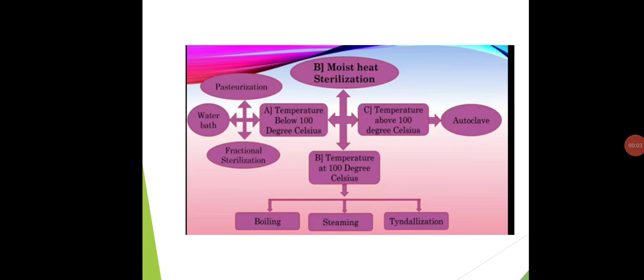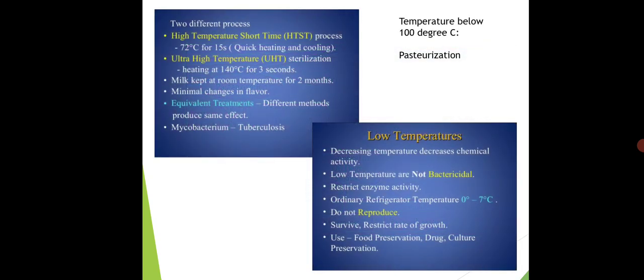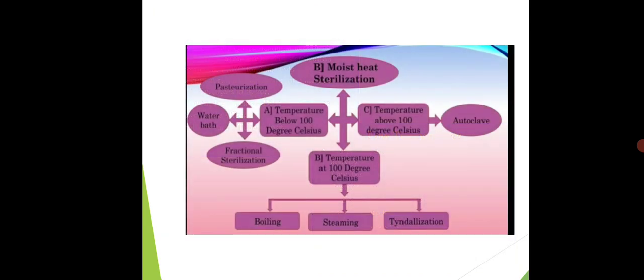Hello students, we have started with our physical methods. In the previous lecture we discussed dry heat sterilization and the flow chart for moist heat sterilization. Now in this lecture we are going to discuss each and every method of moist heat sterilization in detail. Moist heat sterilization is divided into mainly three classes: temperature below 100°C, temperature at 100°C, and temperature above 100°C. Temperature below 100°C is further subdivided into three classes: pasteurization, water bath, and fractional sterilization.